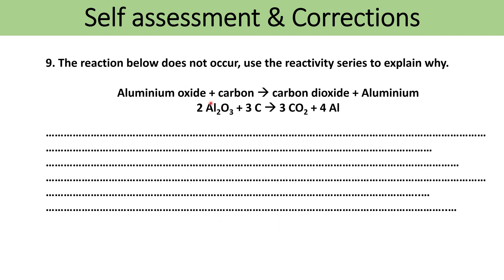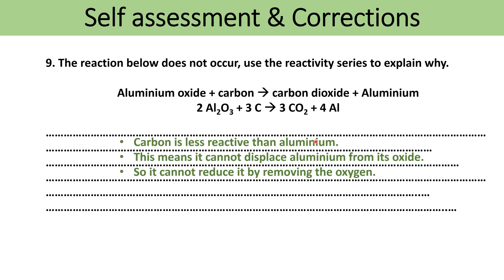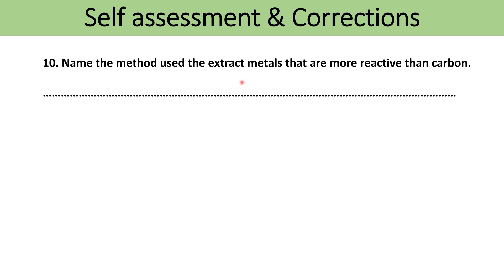This reaction does not occur — use the reactivity series to explain why. If we compare carbon with aluminium, carbon is actually less reactive than aluminium, so it would be unable to displace aluminium and therefore also unable to reduce it. Carbon cannot displace aluminium from its oxide, so it cannot reduce it by removing the oxygen, and this reaction would never get to the products. For metals more reactive than carbon, such as aluminium, the method used for extraction is electrolysis.